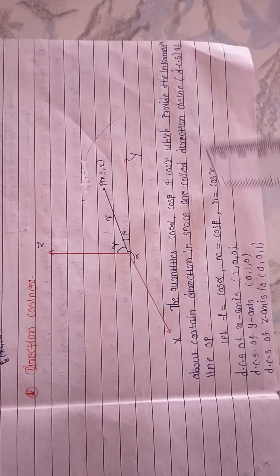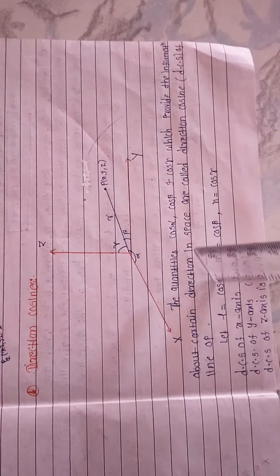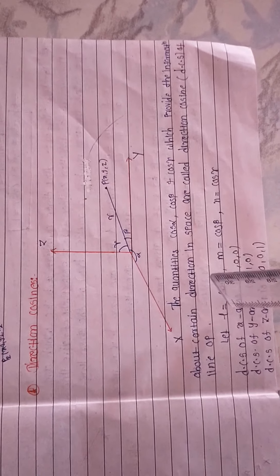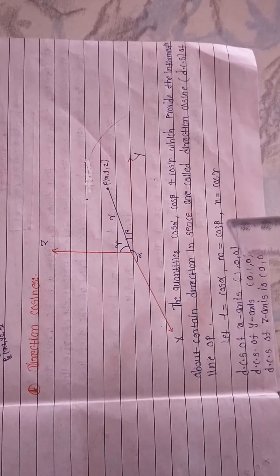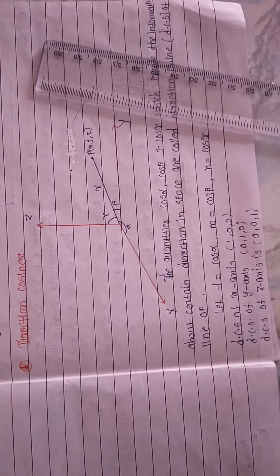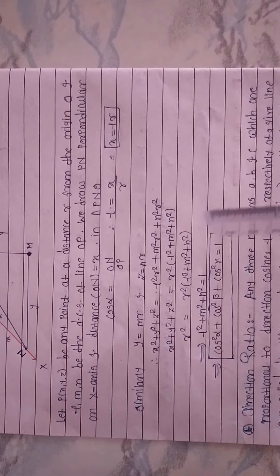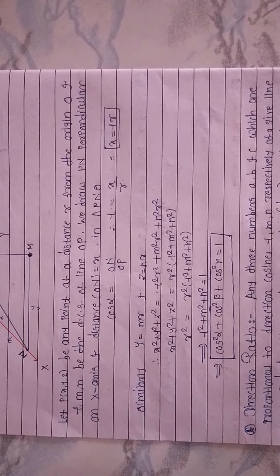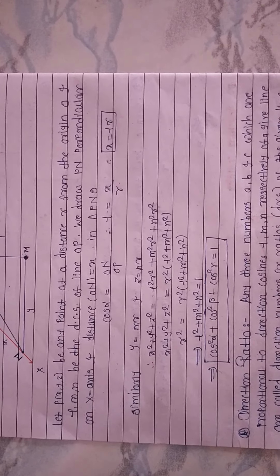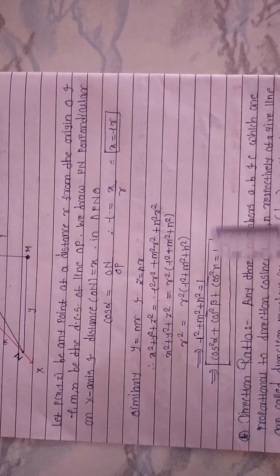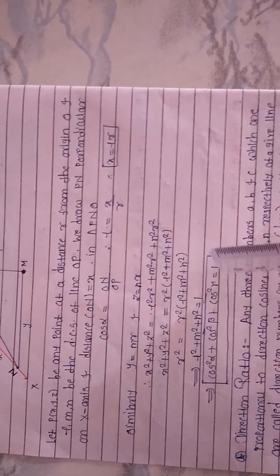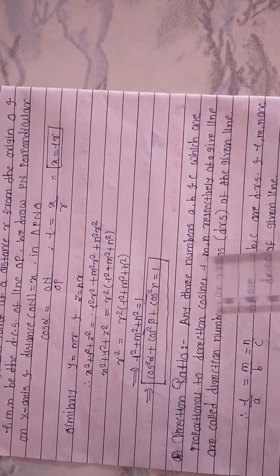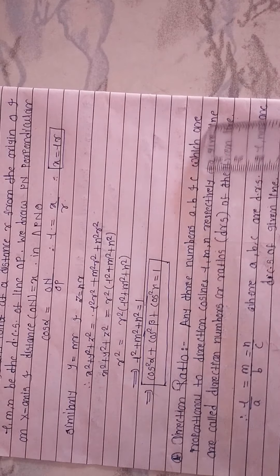Let us obtain the direction cosines of the coordinate axes. The DCs of the x-axis are (1, 0, 0), because the x-axis makes a 90° angle with both the y-axis and z-axis, so cos β = 0, cos γ = 0, and cos α = cos 0° = 1. Similarly, the DCs of the y-axis are (0, 1, 0) and the DCs of the z-axis are (0, 0, 1). An important property of direction cosines is that cos²α + cos²β + cos²γ = 1, that is, l² + m² + n² = 1.